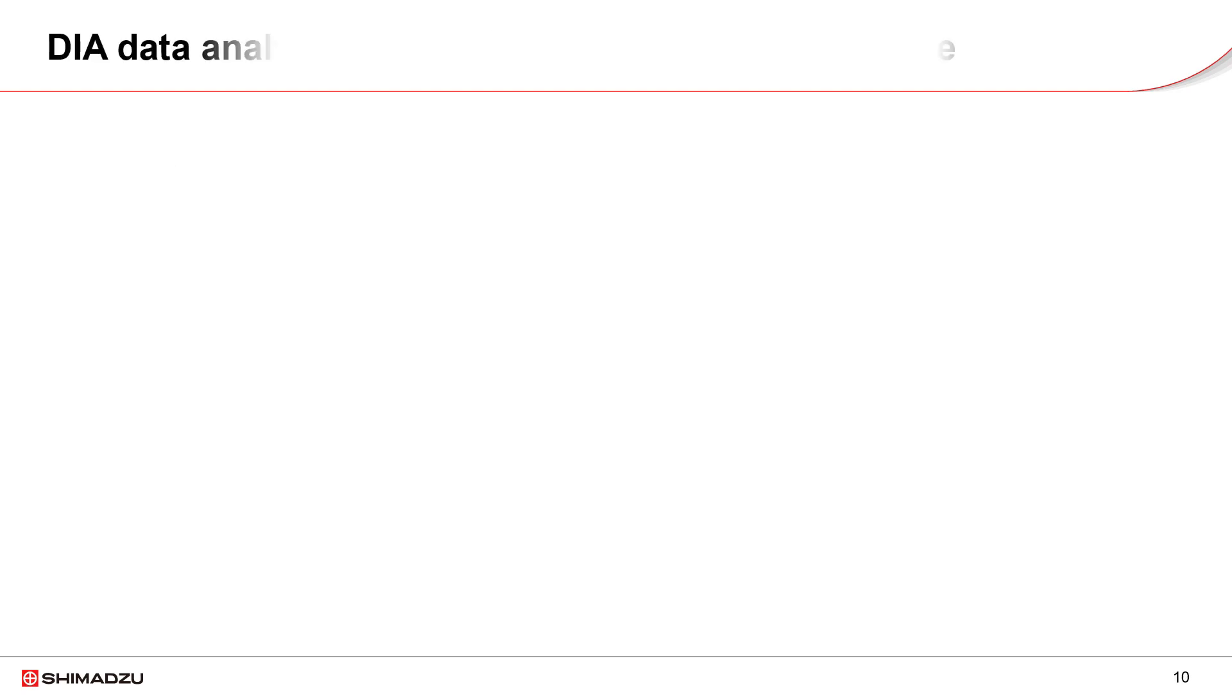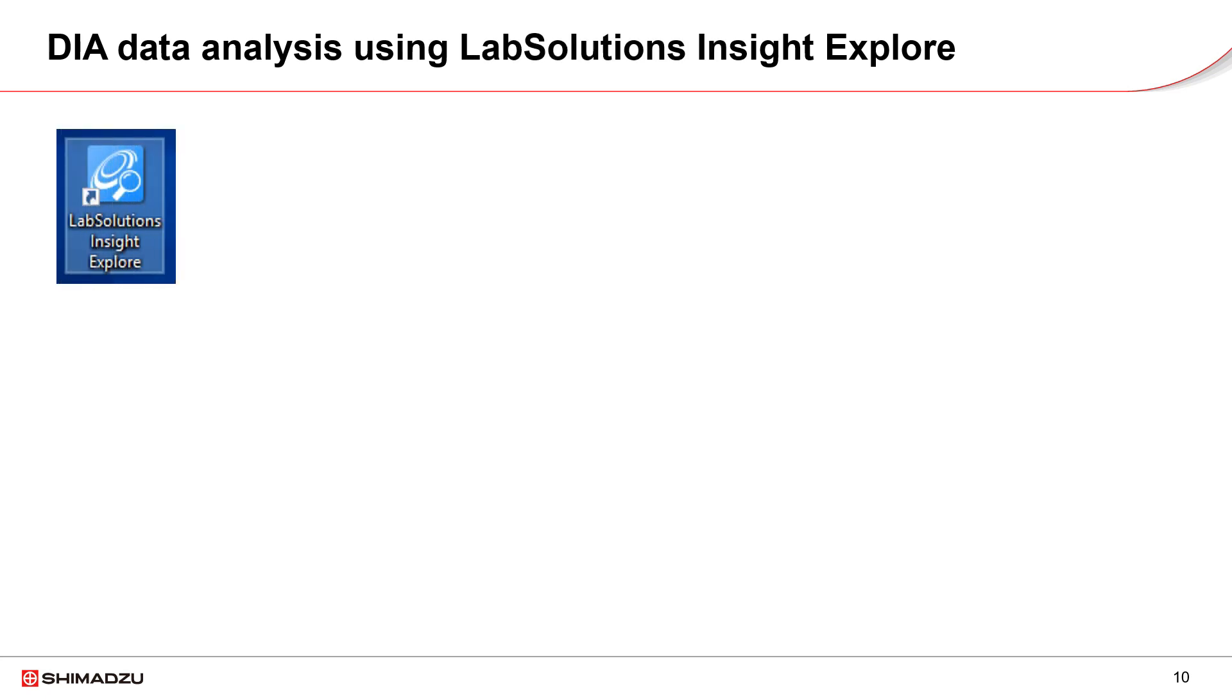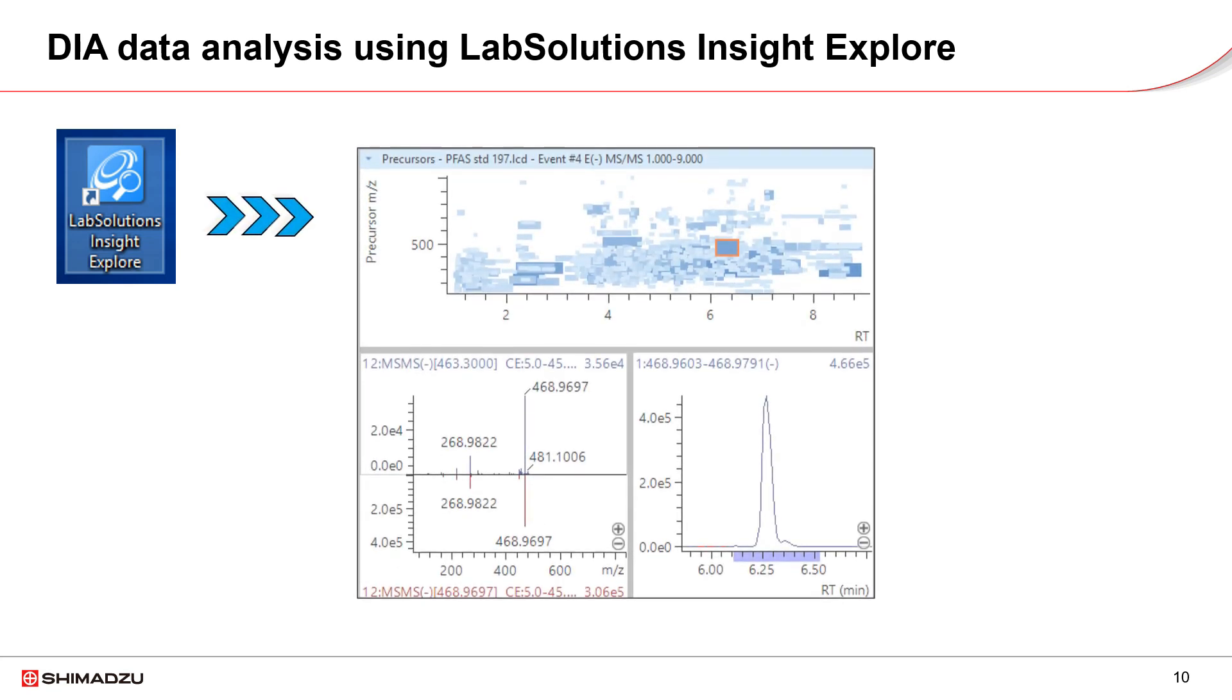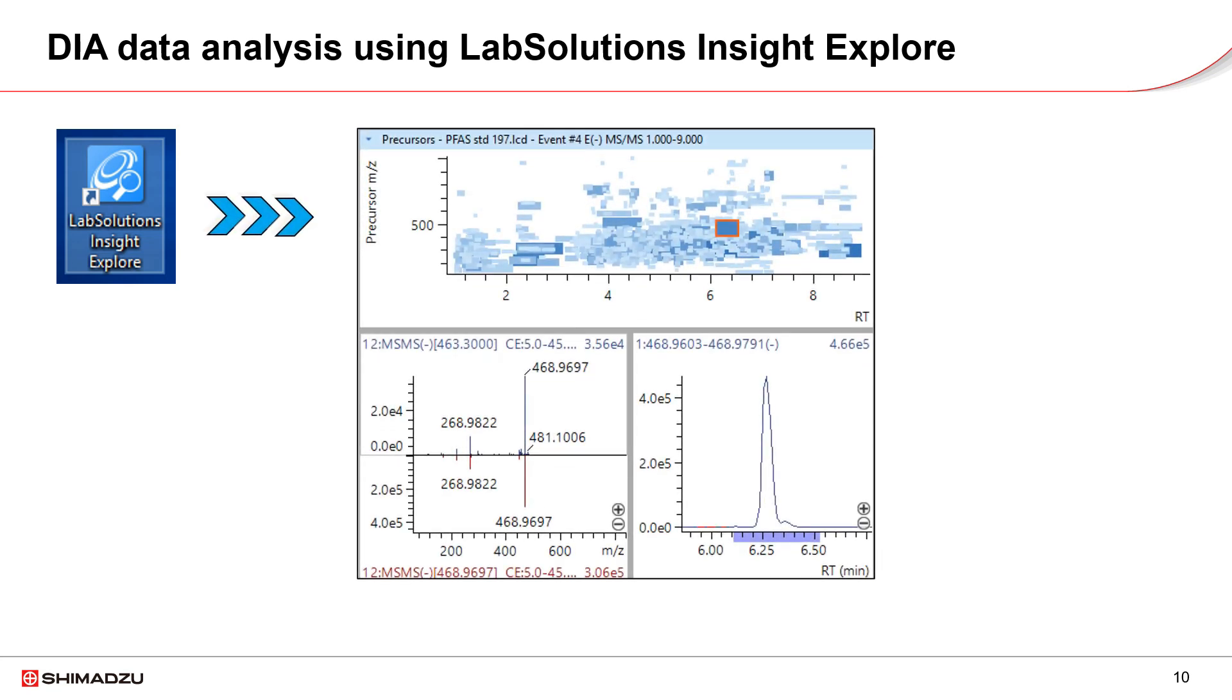DIA data analysis is performed by the LabSolutions Insight Explore software. First, DIA data is deconvoluted to obtain precursors in MS-MS spectra. A precursor pane displays all the precursors deconvoluted. Click on any precursor. The XIC and MS-MS spectrum are displayed in the bottom of the screen.